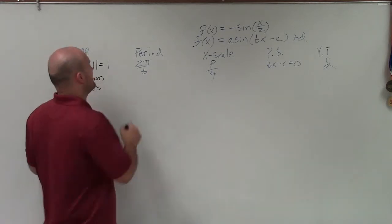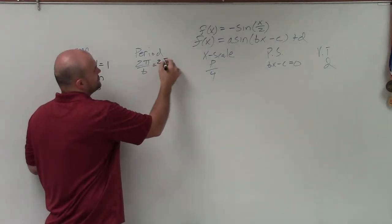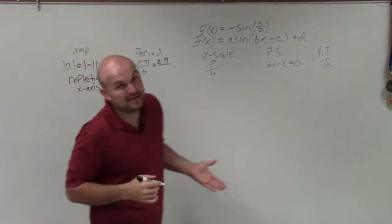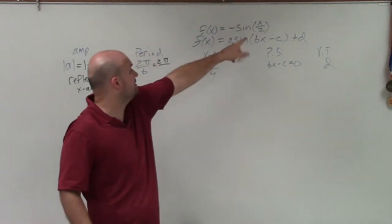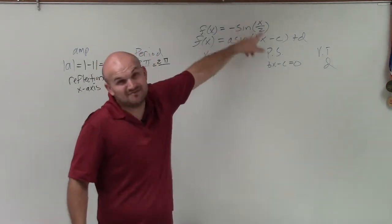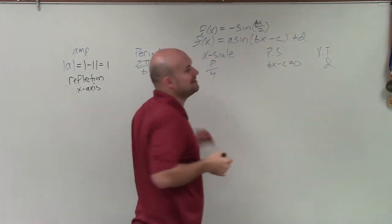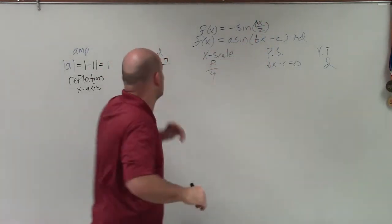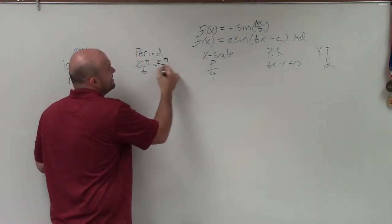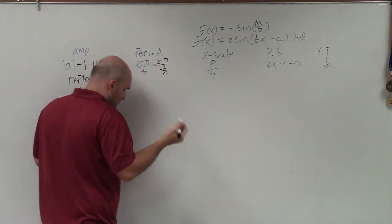Sweet. My period is 2 pi divided by b. So in this case, I have 2 pi divided by, and you can say, well, there's no b, right? I'm not multiplying by any number. I'm dividing by a number, right? Well, really, you can say you're being multiplied by 1, and that 1 is being divided by 2. So basically, you have 2 pi divided by 1 half.